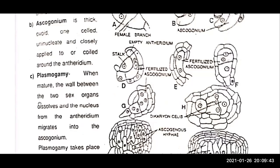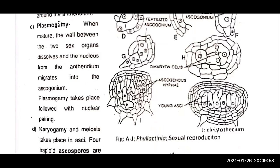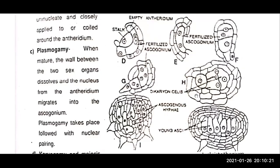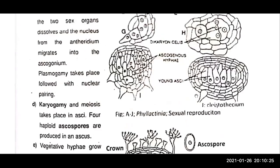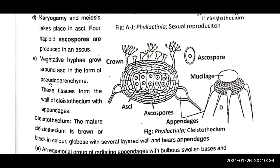Plasmogamy: when mature, the wall between the two sex organs dissolves and the nucleus from the anthridium migrates into the ascogonium. These are the fruiting bodies, which are the structures of the ascomycetes. Four haploid ascospores are produced in an ascus.